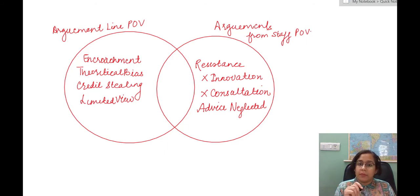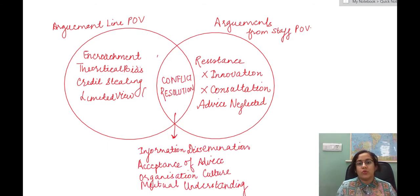Now in the diagram, you can add how to resolve the conflict. So in the conflict resolution will be the common part of the Venn diagram, we can resolve the conflict through information dissemination. Only when the staff authority knows what actual problems are occurring on the ground can they provide relevant and practical advice.